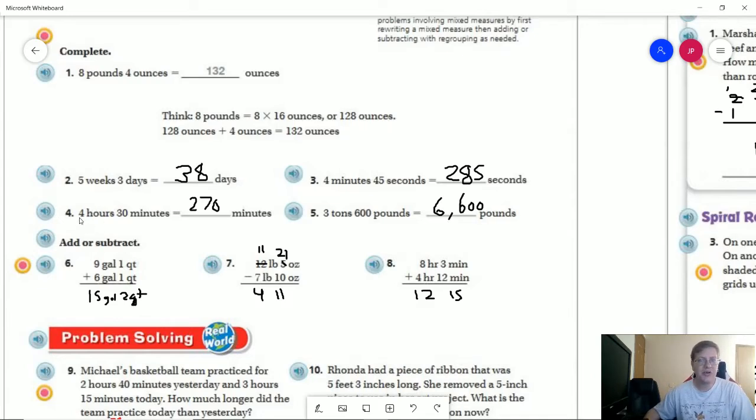60 minutes in an hour times four is going to give us 240. 240 plus 30 is going to give us 270. So we're kind of using the same idea for both of these. We're just going from hours to minutes versus minutes to seconds.